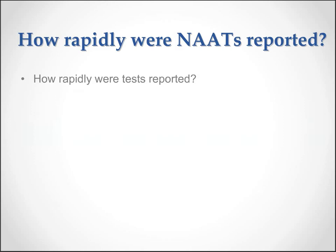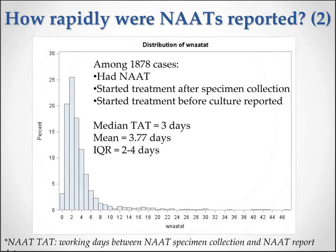But why was it even that length? We wanted to look at how rapidly tests were being reported — what was the turnaround time when a NAT was ordered. These tests take less than a day to run, but of course the real world is different. You have to get the specimen to the lab, decide to send it, and the lab has to be open. This bar graph shows how rapidly NATs were reported among 1,878 cases who had a NAT and started treatment before the culture was reported. The median turnaround time was three days with a mean of close to four days, with the large majority having a result reported back within four working days, but with a long tail and some reported much later.